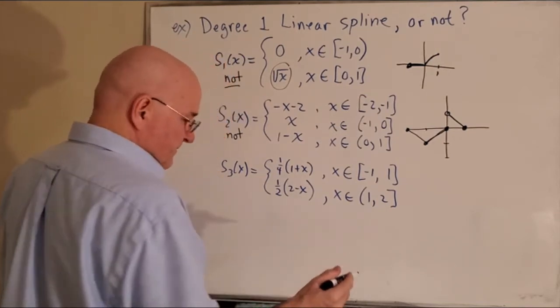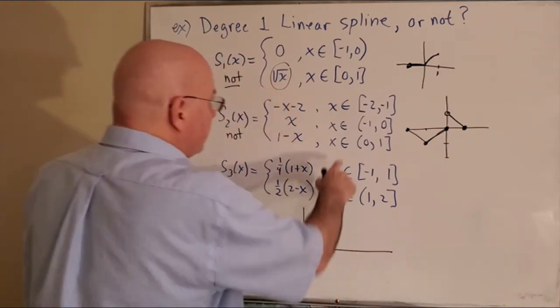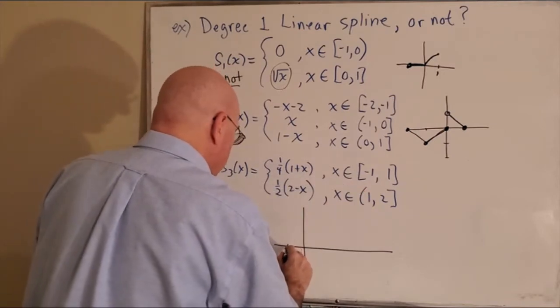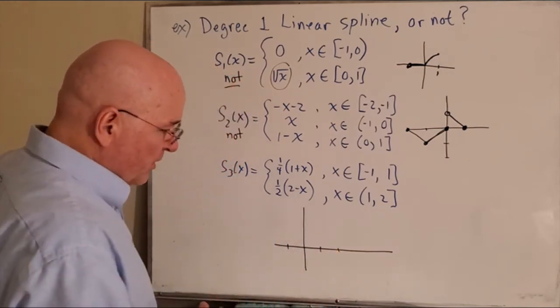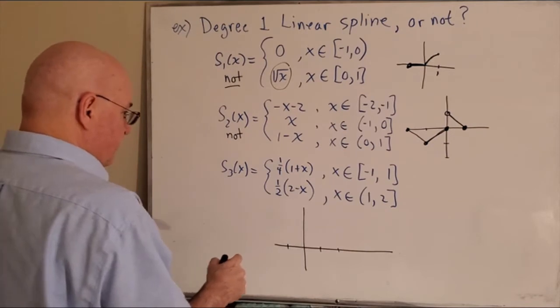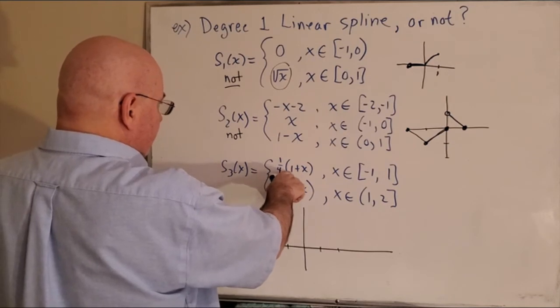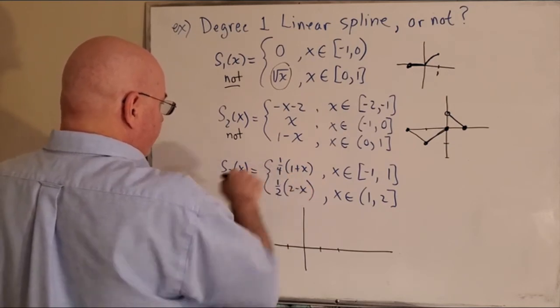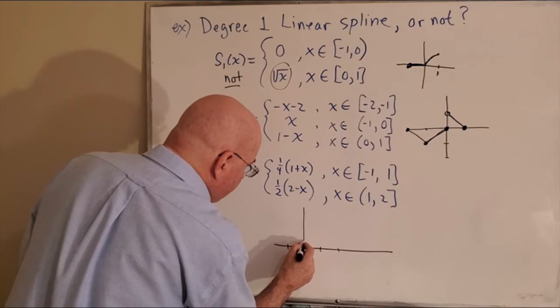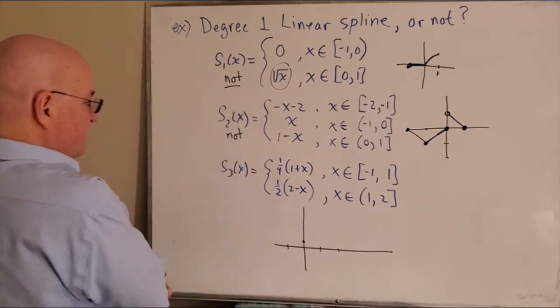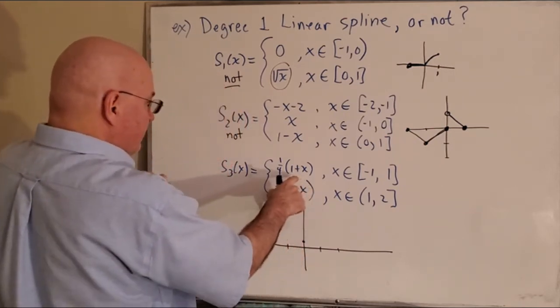Then the next one - maybe I will do it down here. It goes from negative one to two. Okay, so from negative one to one we have... if I multiply that through I get one-fourth plus one-fourth x. So the y-intercept, which is in between here, the y-intercept is one-fourth, and the slope is one over four. So I'm going to go like - let's see, at negative one it's zero.